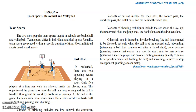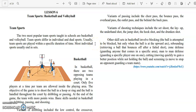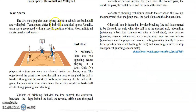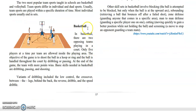Good day students. Today we're going to tackle Lesson 6, which is team sports: basketball and volleyball. Let us first define what we mean by team sports. The two most popular team sports taught in schools are basketball and volleyball. Team sports differ from individual and dual sports — usually team sports are played within a specific duration of time, while most individual sports end in sets.